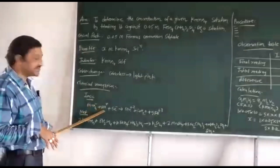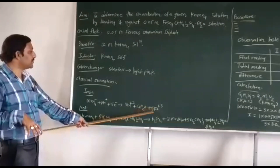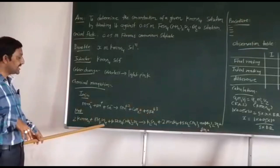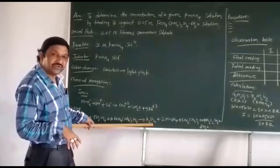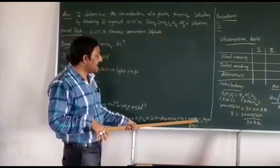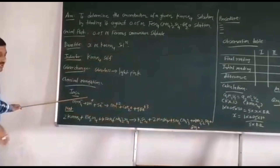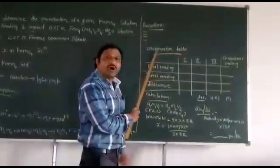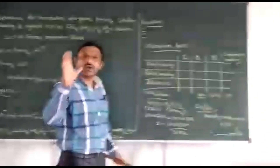Here is your ionic reaction: MnO4⁻ + 8H⁺ + 5e⁻ gives Mn²⁺ + 4H₂O + 5Fe³⁺. Net reaction. Here is your observation table — you have to take three readings and prepare the observation table.